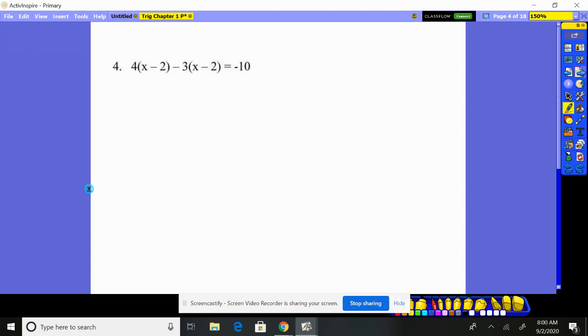Here we go. Distribute the 4 through. 4x, 4 times 2 is 8, minus 8. Now here you've got to make sure it's a negative 3 that goes through. So it's negative 3x. Negative 3 times the negative 2 is positive 6. That's where I expect the mistake to happen. Now I have 4x minus 3x is x. Lose 8, gain 6. You've lost 2. Equals negative 10. And now simply add 2 to both sides. And you'll have your final answer for number 4 of negative 8. There's the first four problems for you.